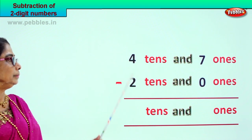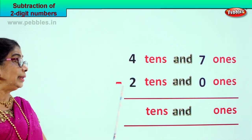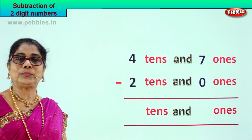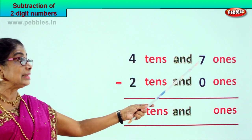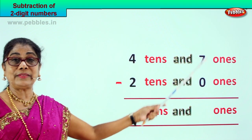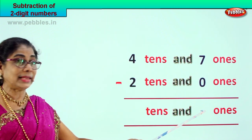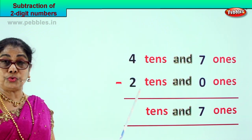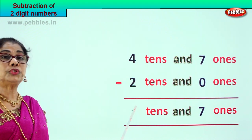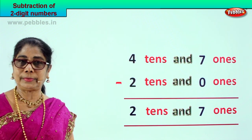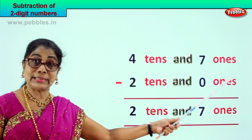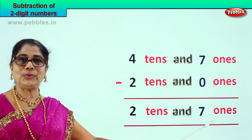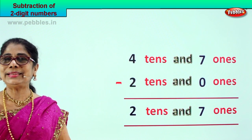Let's go to a new sum now. 4 tens and 7 ones minus 2 tens and 0 ones — 47 minus 20. We will go to the ones and minus first: 7 ones minus 0 — 7 take away 0 is 7 itself. Then 4 take away 2 — 4 minus 2 is 2. Your answer is 2 tens and 7 ones. Did you enjoy the 2-digit subtraction sums?